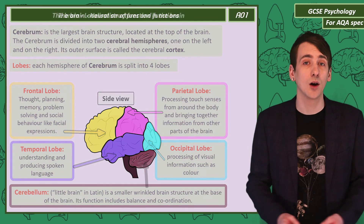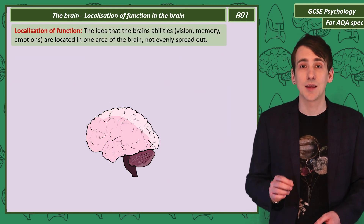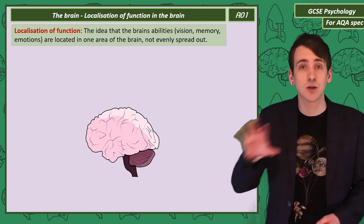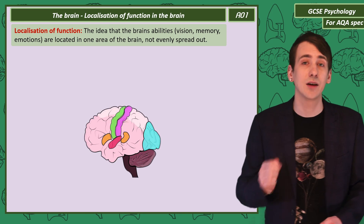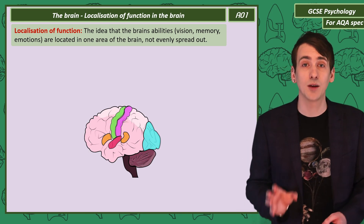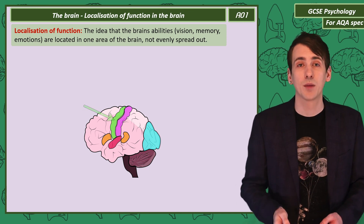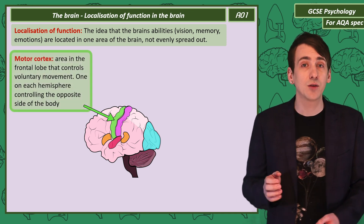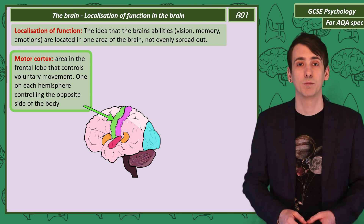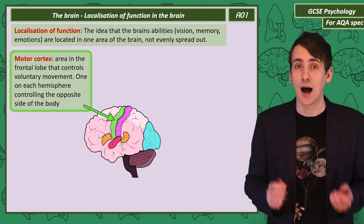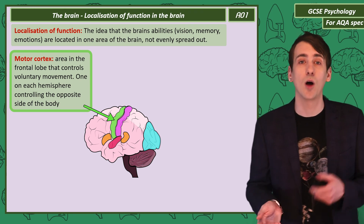Now I've outlined the lobes and some of their functions — what they're responsible for. This idea that the brain's abilities are not evenly spread across the brain but are located in particular places is called localisation of function. We should be able to identify a few precise areas of the brain that have particular functions. The motor cortex runs along the top back of the frontal lobe and controls voluntary movement. You have one in each hemisphere, and because the brain is contralateral, the motor cortex moves the body on the opposite side.